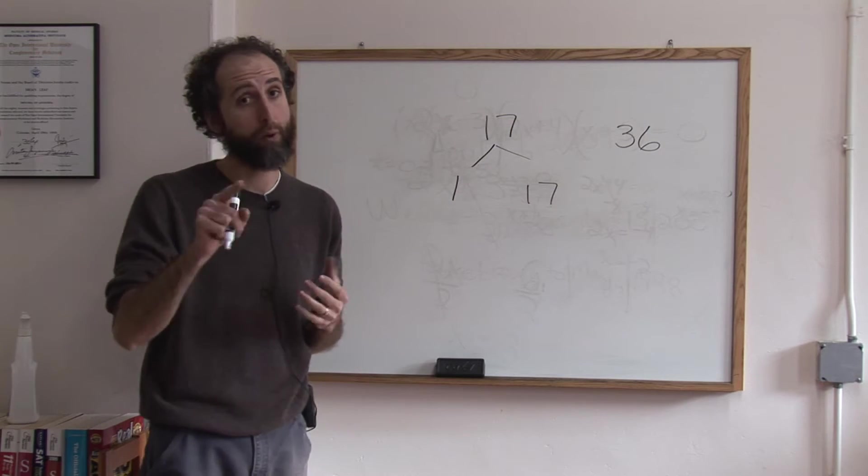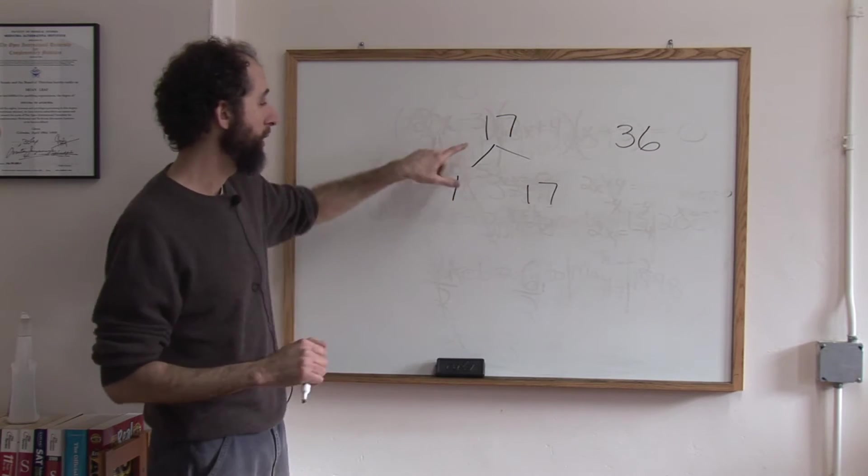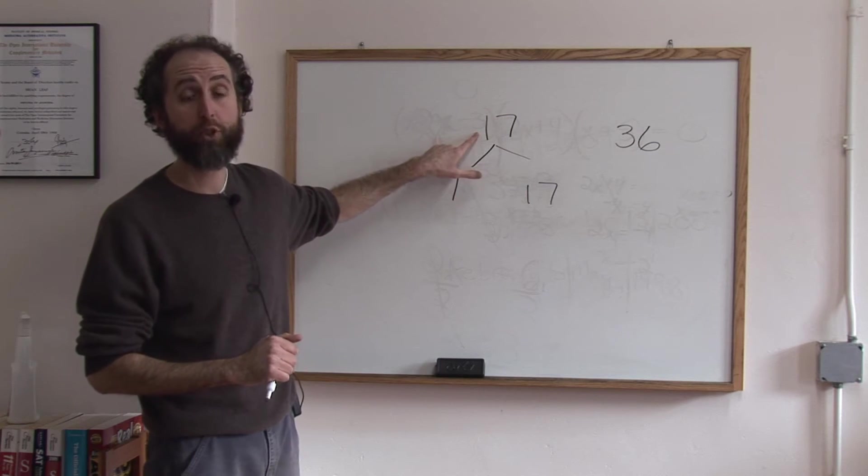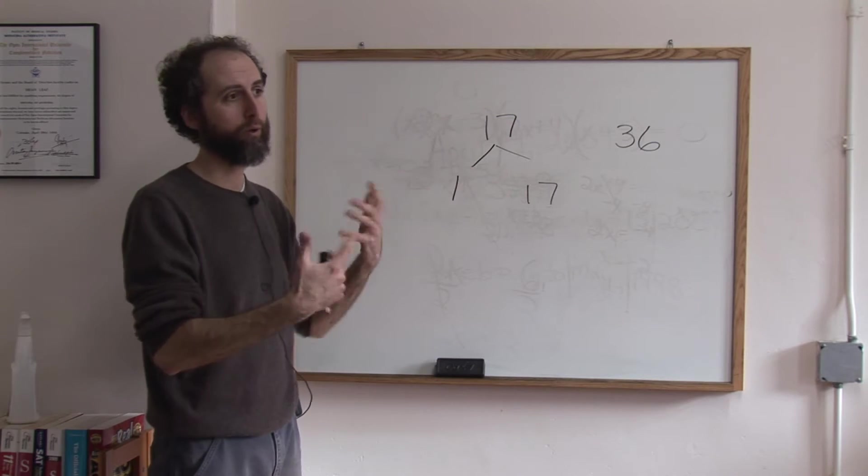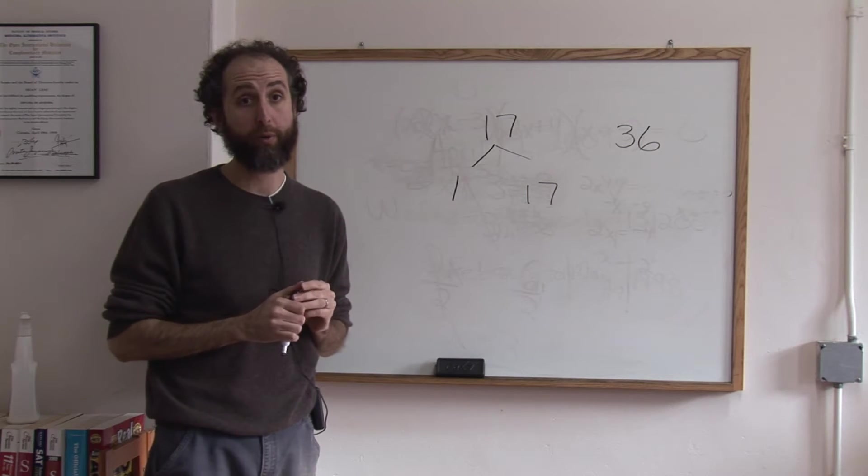There's no other whole numbers. By the way, we're talking about whole numbers. Of course, 8½ times 2 is 17, but we're only talking about integers or numbers without a decimal part.